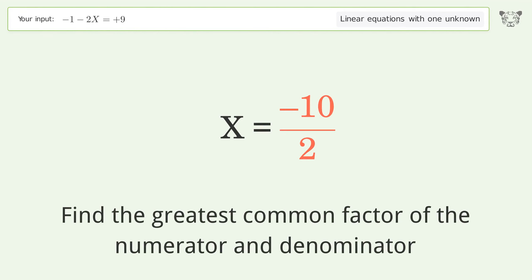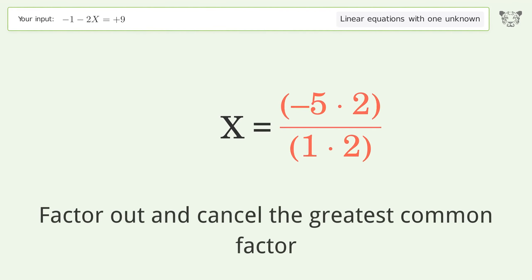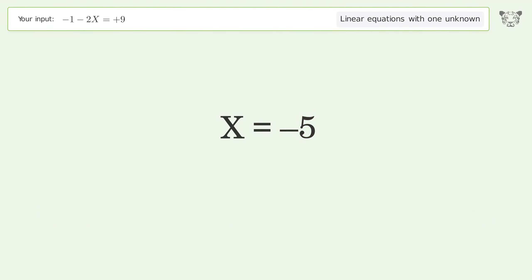Find the greatest common factor of the numerator and denominator. Factor out and cancel the greatest common factor. And so the final result is X equals negative 5.